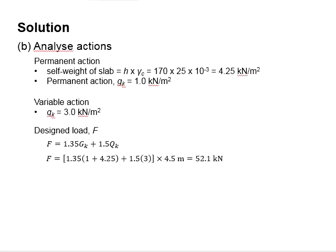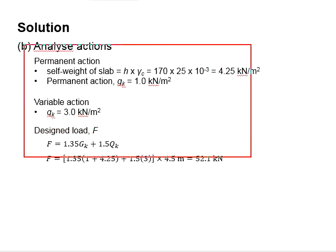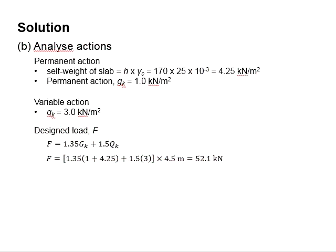Next, you analyze the action acting on the member. For example, the permanent action consists of the permanent load plus the self-weight of the slab. The self-weight of the slab is obtained by multiplying the thickness with the unit weight of the concrete, which eventually you will obtain 4.25 kN per m². Therefore, your total permanent action will be the summation of these two.